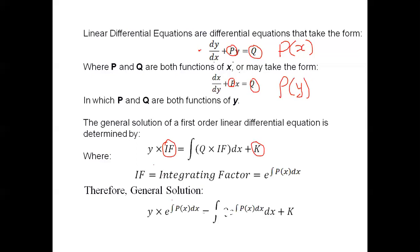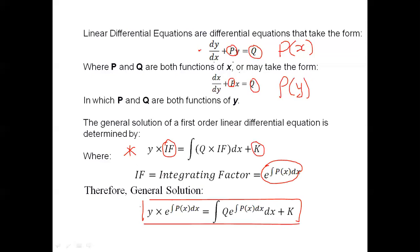So the general solution, after replacing the value of IF with e raised to the power of the integral of p of x dx, yields this general solution. This is a very important expression in this topic: y multiplied by e raised to the power integral of p dx, equals the integral of q times e raised to the power integral of p dx, with respect to x, plus an arbitrary constant k.